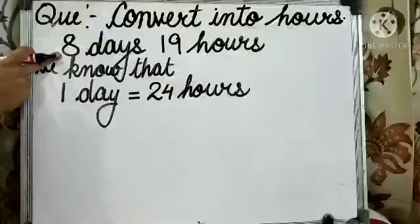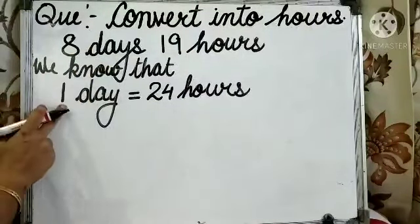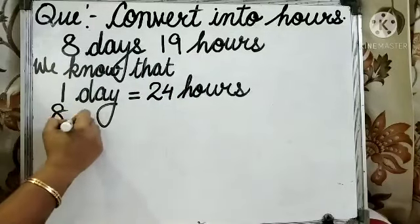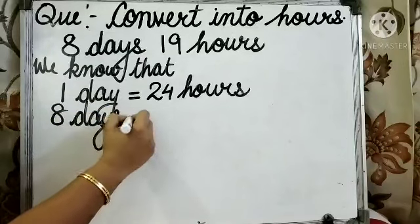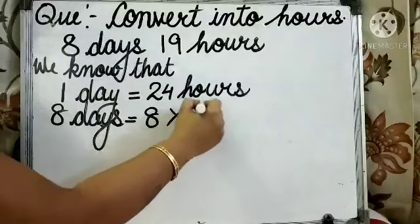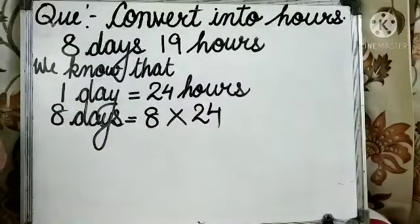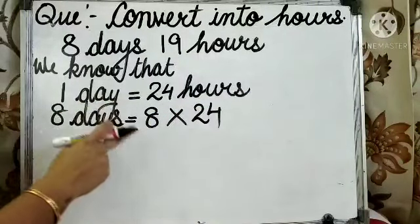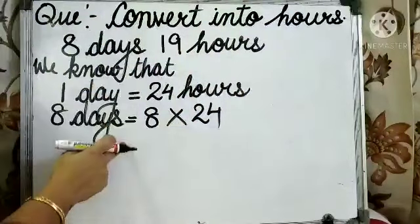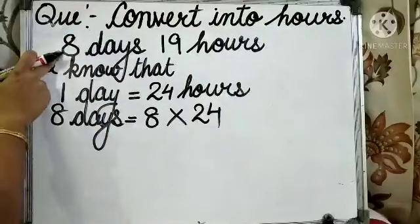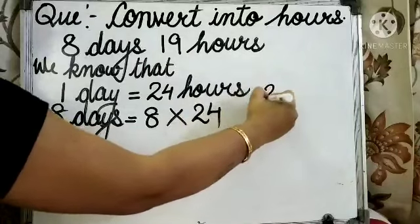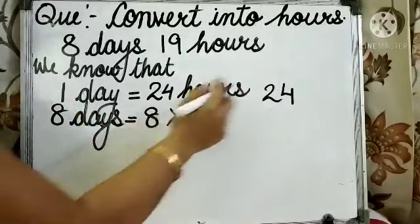We have to convert 8 days into hours. 1 day is equal to 24 hours. So, 8 days is equal to 8 multiplied by 24. To convert days into hours, we need to multiply the number of days by 24. So, here, we will multiply 24 by 8.